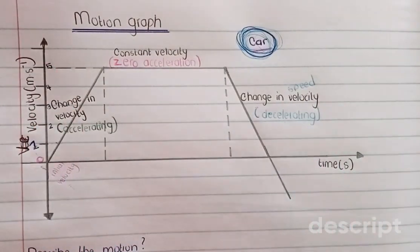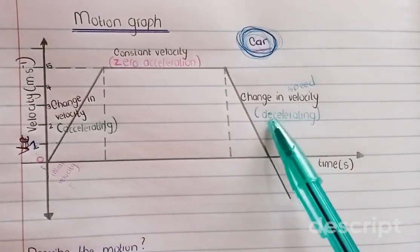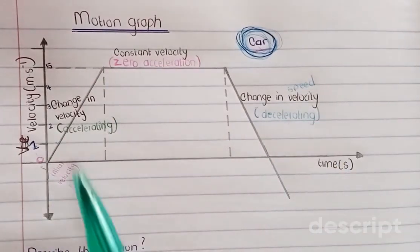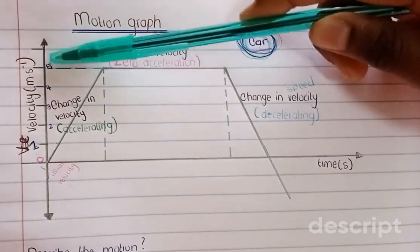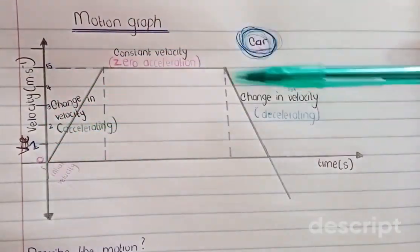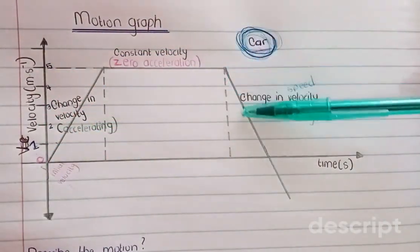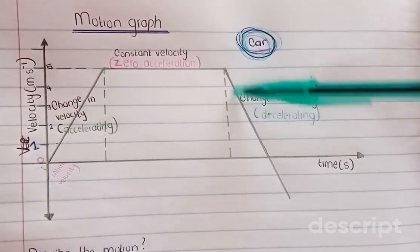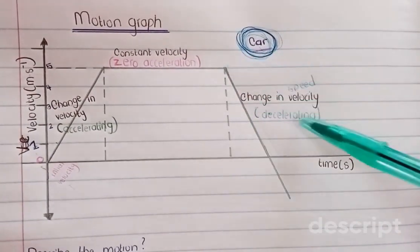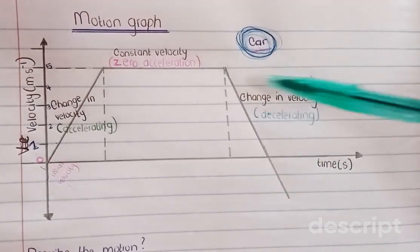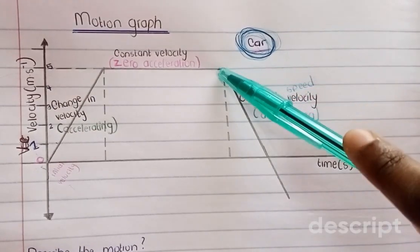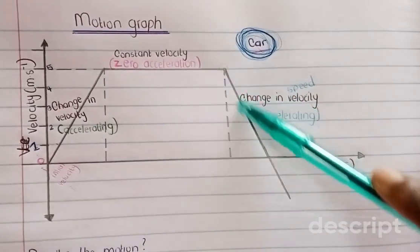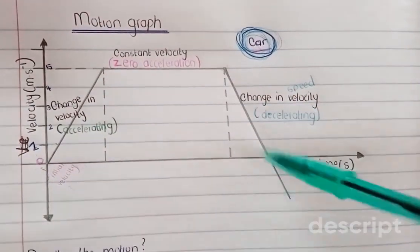Then we move to the third section, which is decelerating. I look at it the same way as acceleration, but in reverse: 5, 4, 3, 2, 1. As you can see, the car is now decreasing in speed. To reduce or decrease your speed is simply called deceleration. The car is changing its velocity and it is decelerating.